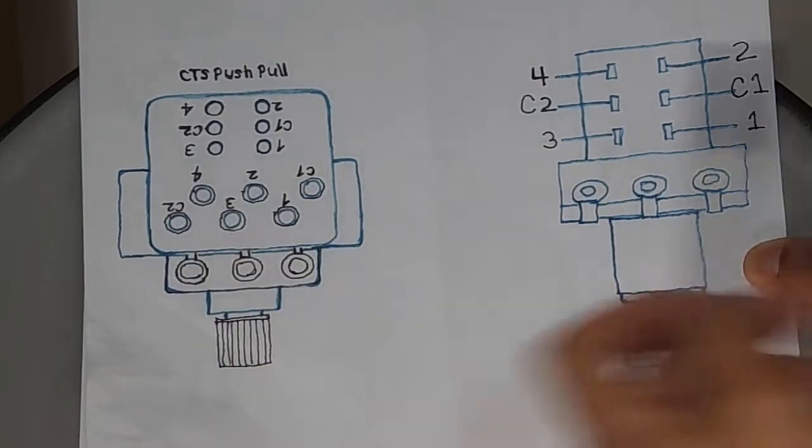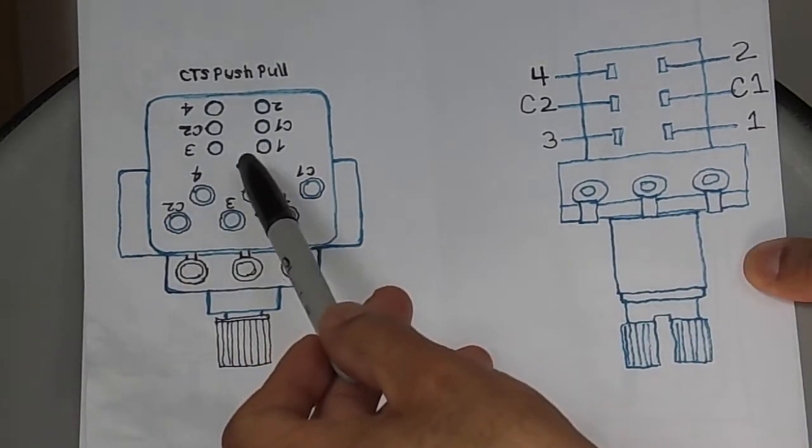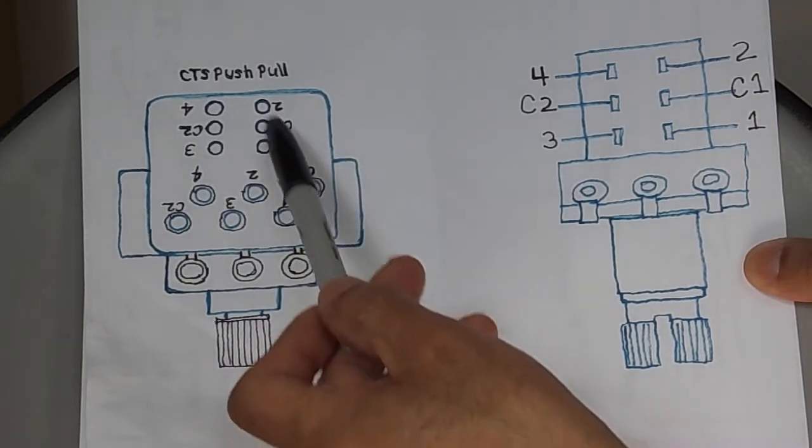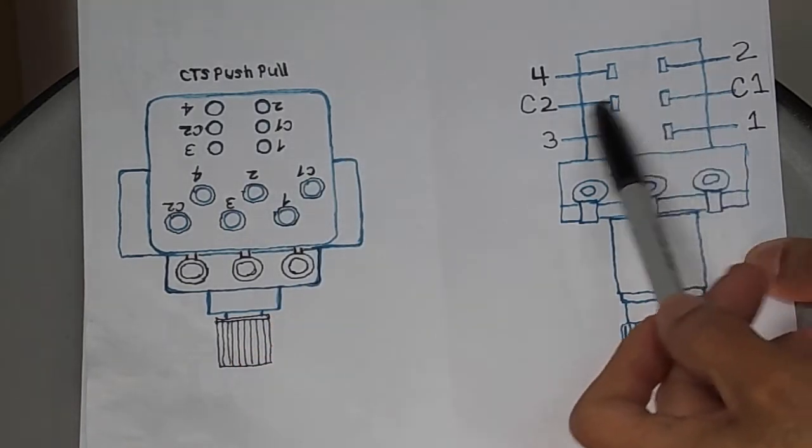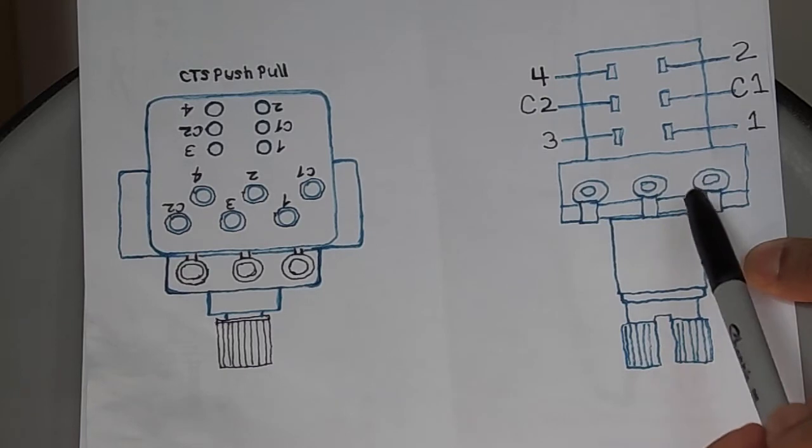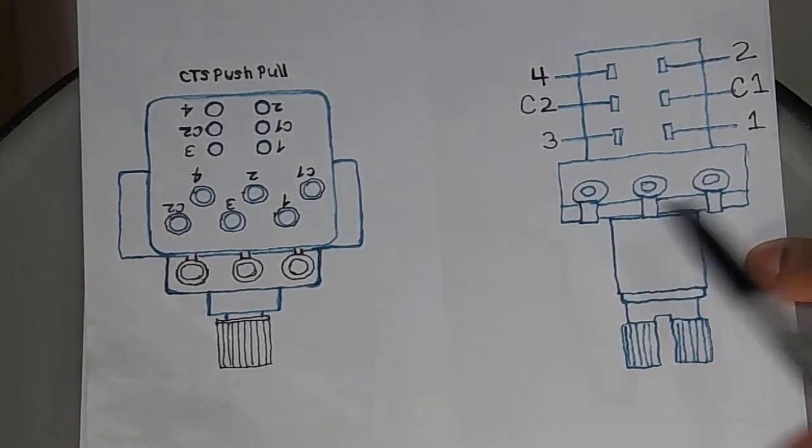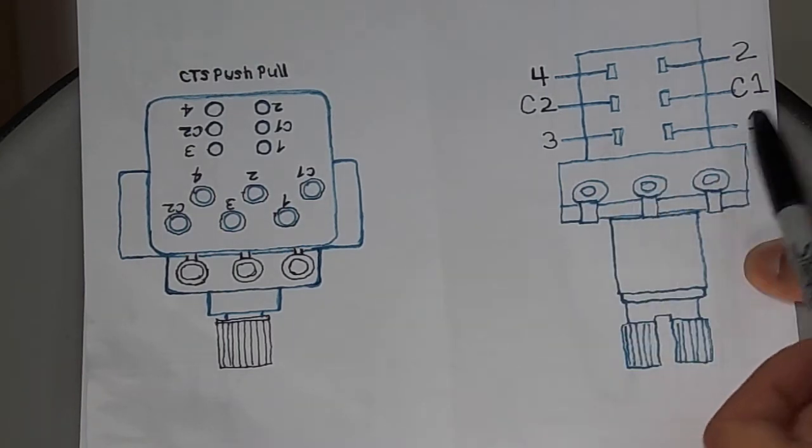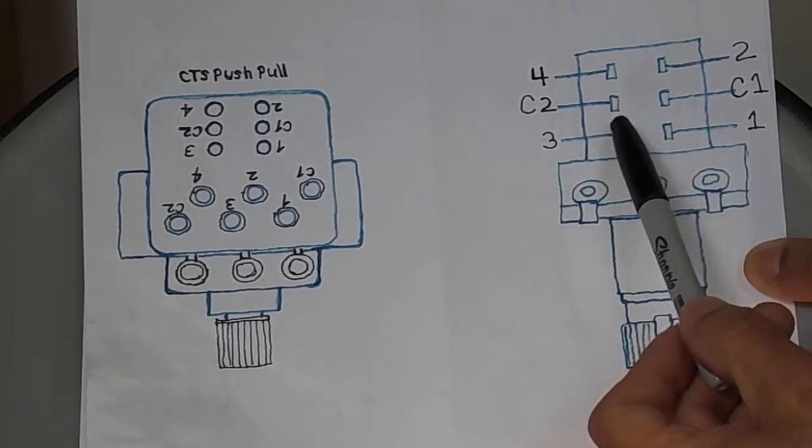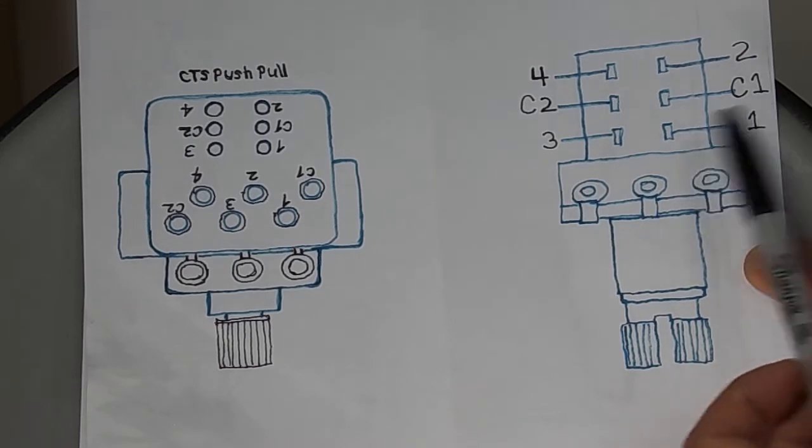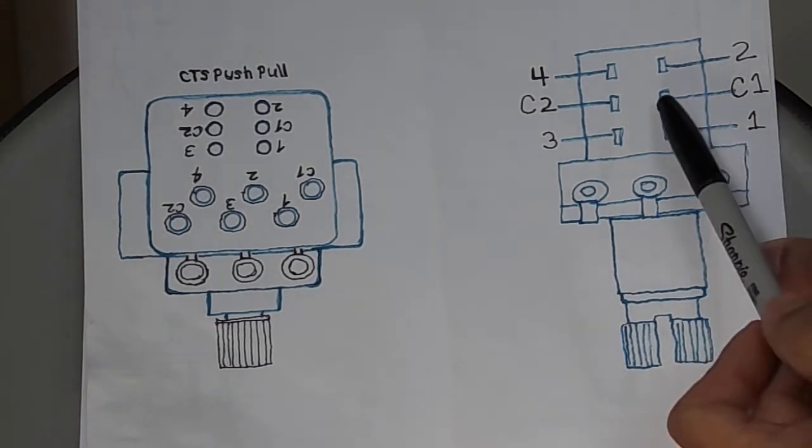So if you had to solder something through lug number four, you would find number four down here and just solder there. On the right you got one, C1, and two. So on this classic type push-pull pod, two, C1, and one corresponds with the CTX.